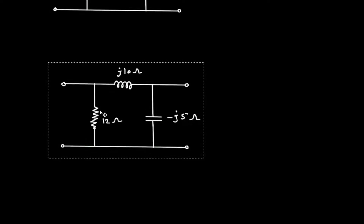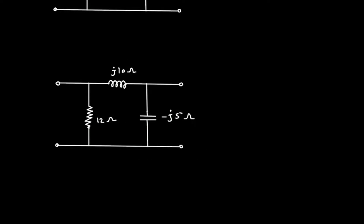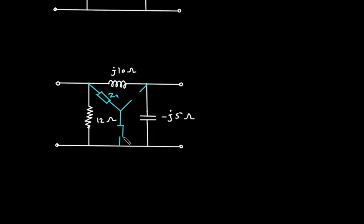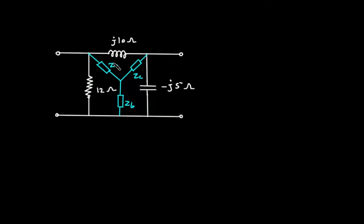we will redraw this. Our T network will look like this. Here let's say this is ZA, this is ZB, and this is ZC. Now there is a formula to convert pi to T network, or we can say this forms a delta network, and we have to convert it into its equivalent star network.